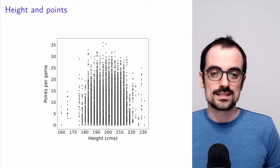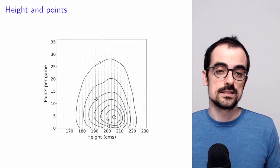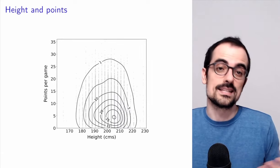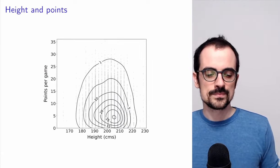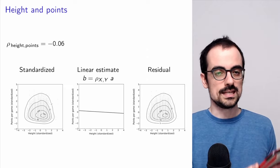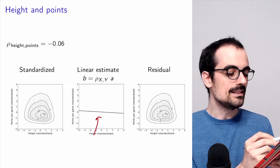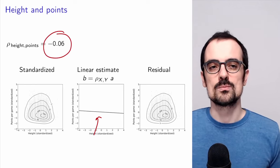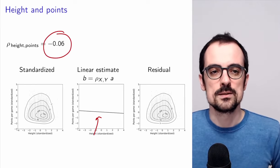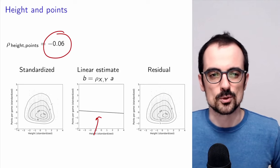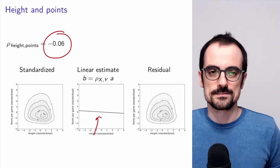Finally, we look at height and points. The scatter plot and kernel density show the joint distribution. When we look at the linear estimate, its slope is almost zero, indicating that height and points are almost uncorrelated — there is no clear linear dependence between height and points. Maybe they're very slightly negatively correlated, but that's all we can say.